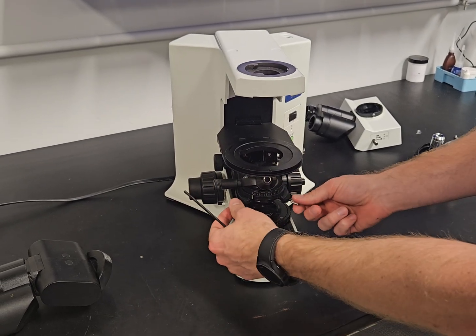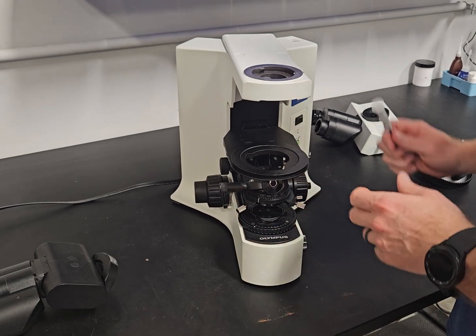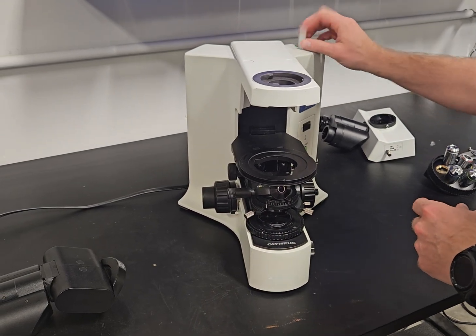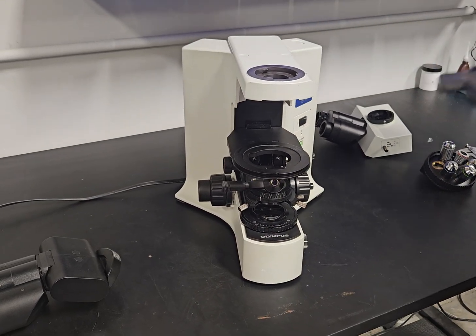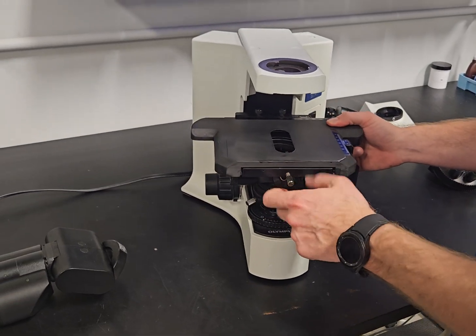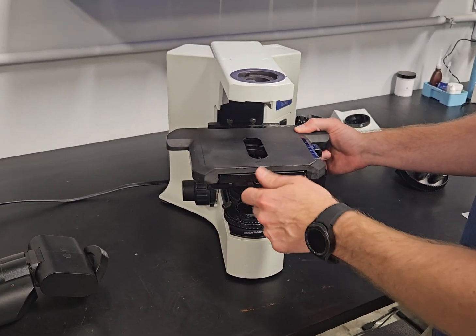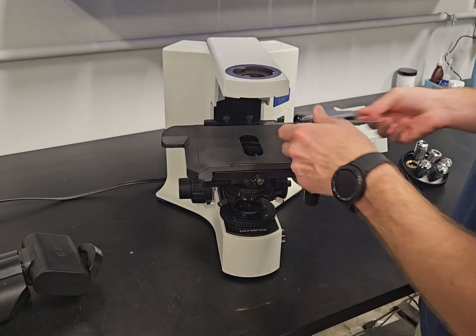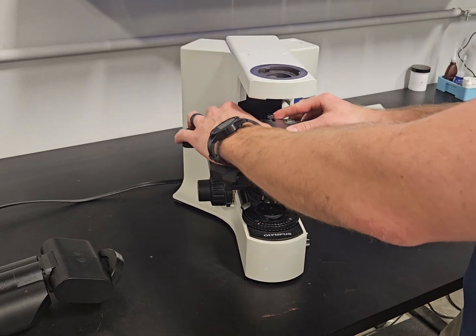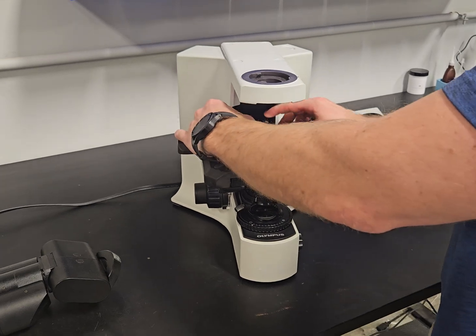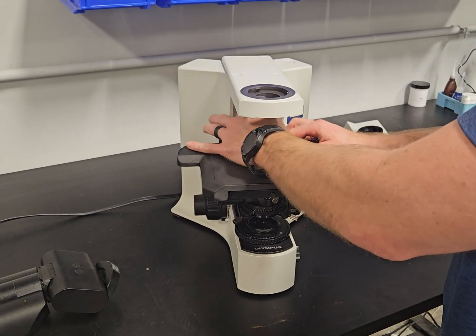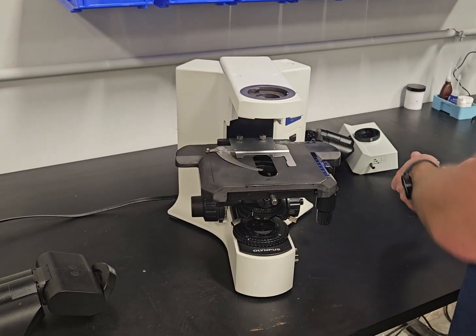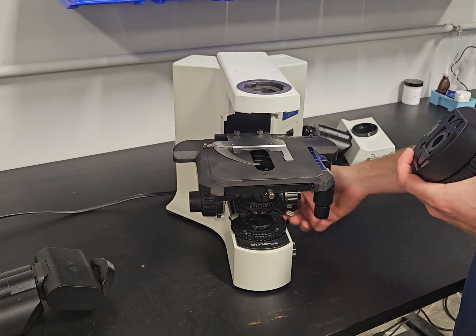These two knobs right here are going to center the condenser. We have another video about setting Köhler illumination that we'll put in the description of this one. It can help you set the Köhler. But whenever you do that, what it's going to do is make sure when you do that process that the scope is par focal from objective to objective within a quarter of a turn is factory spec.